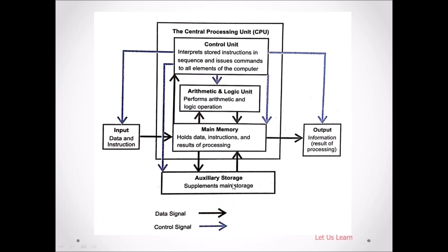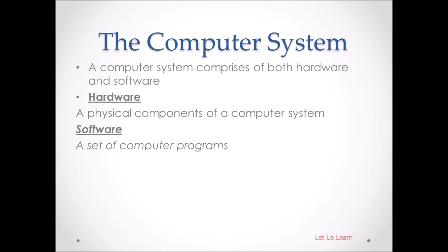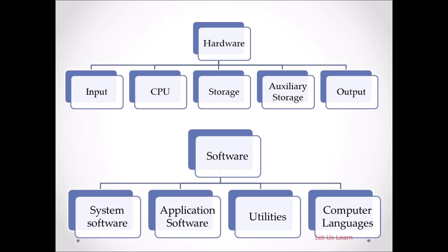Auxiliary storage is your secondary storage unit — for example, a hard disk. Now there are two main parts: hardware and software. Any physical device connected to the computer is called hardware, and a computer program is called software. The different types of hardware are input unit, CPU, primary storage, secondary storage, and output devices. Software is divided into four main parts: system software, application software, utilities, and computer languages.